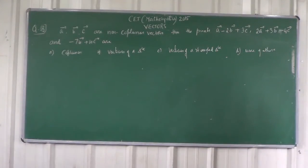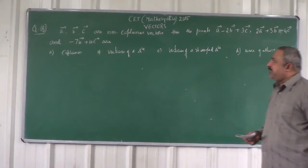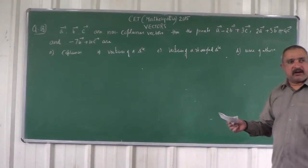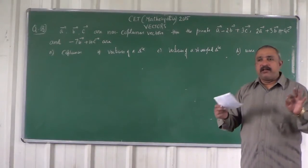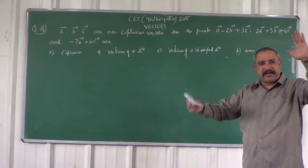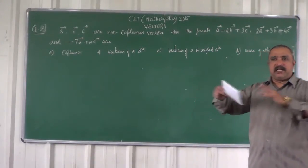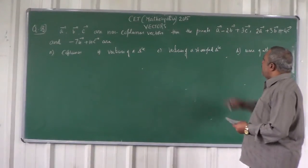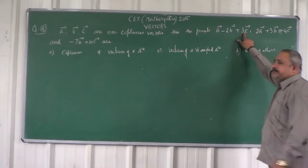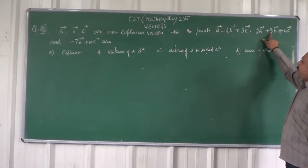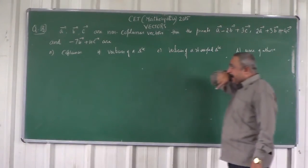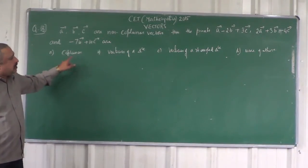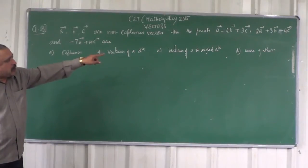There are three vectors given: vector A, vector B, vector C, and it is said that these three vectors are non-coplanar — that means they are not lying on the same plane; they are in different planes. Then these points will be coplanar points, or these three points with coefficients (1, -2, 3),